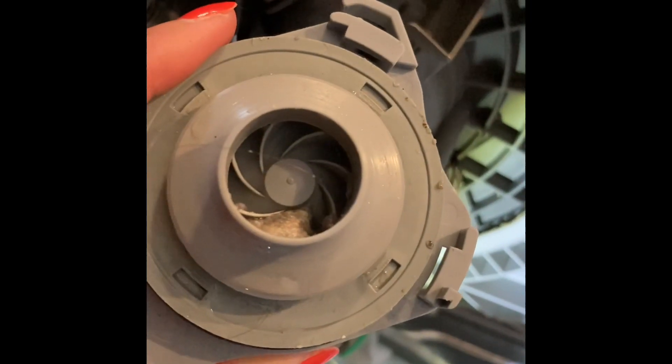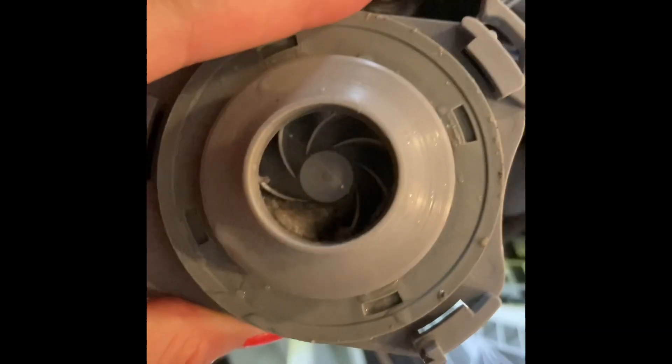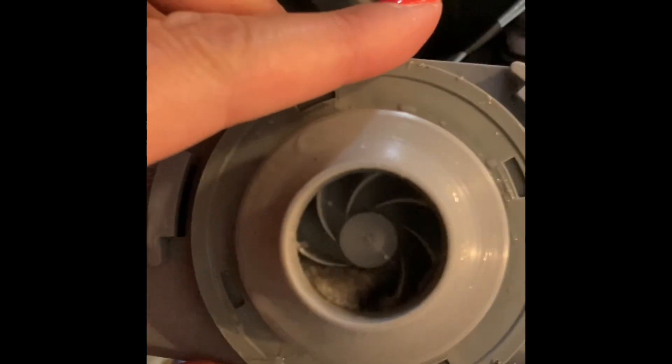So I got it out and you can see that there is some mushy dirt in there. Let's see if I can clean that out and see what else needs cleaning in here, because maybe that's the problem why it's not spraying.